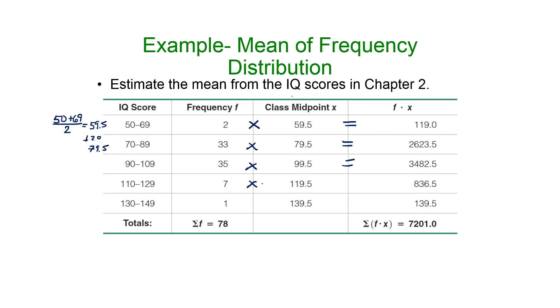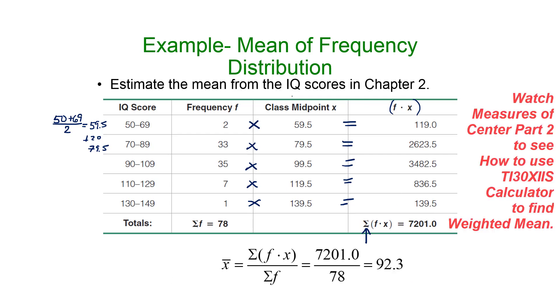What does this symbol mean? The sigma? The sum of what? See how I've titled this third column f·x? The sum of those products. It's just like you did with your GPA, multiplying the grade times the number of credits. You should have gotten 92.3 by dividing 7201.0 by 78.